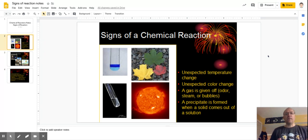But if I take two substances that are the same temperature, they're both at room temperature, and I combine them together, and as a result of that chemical reaction, the temperature either increases or decreases, then that would be an unexpected temperature change.